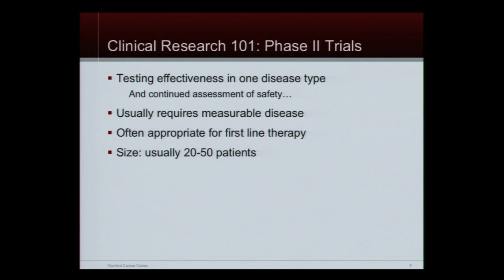Phase two usually requires measurable disease. That means we need a scan that shows, okay, that tumor is 2.3 centimeters. I'll give you this experimental drug, and two months later we'll get another scan. If it's 2.8 centimeters, this treatment didn't work; if it's 1.8 centimeters, this treatment is working. It's an early readout of effectiveness. Phase two is often appropriate first-line — you don't need to have had every drug under the sun. It's typically 20 to 50 patients, so we can gather an experience and say something statistically meaningful, such as it works for 20% of patients, or 50% had a wonderful response.